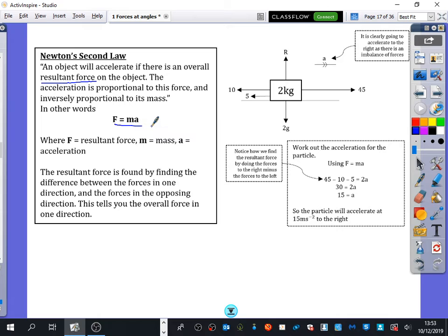Obviously the mass has to be in kilograms, and the acceleration will be in metres per second squared, and the resultant force will be in newtons. The annoying thing about the F here is it is the resultant force. The resultant force is found by finding the difference between the forces in one direction and the forces in the opposing direction. This tells you the overall force in one direction.